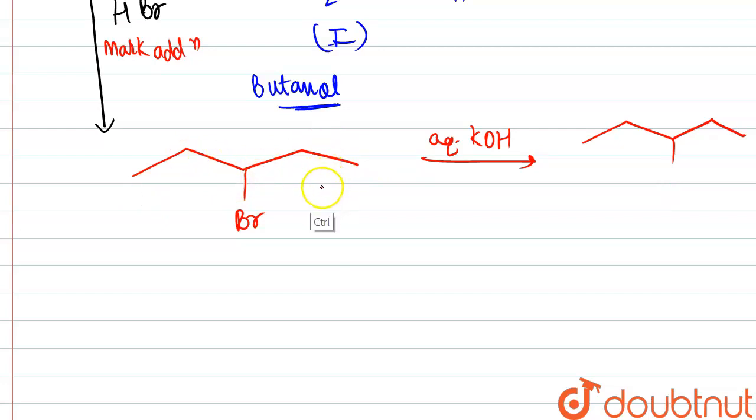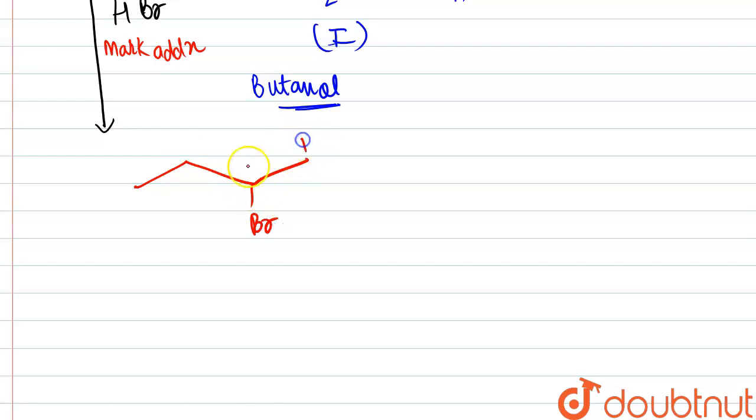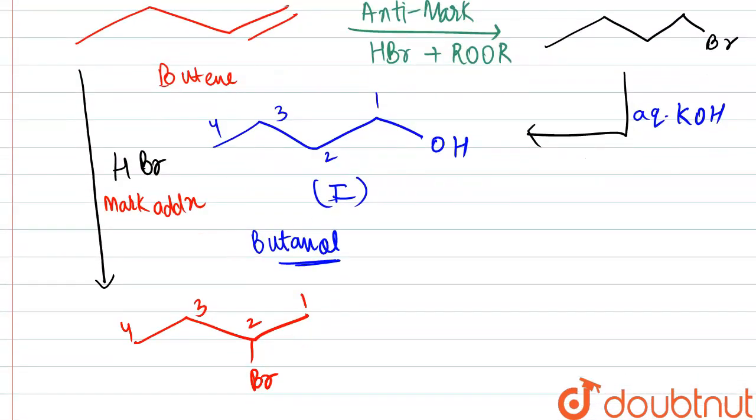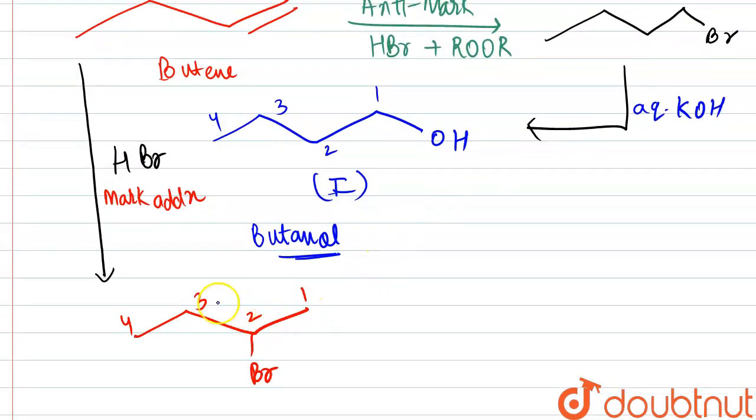We can mention it clearly - Markovnikov's addition we have done. So what would be the substituent attached? That would be simply here, Br will be attached. So we can see one, two, three, four - 2-bromo-butene we would be getting. Sorry, one, two, three, four - 2-bromo-butene we would be getting.